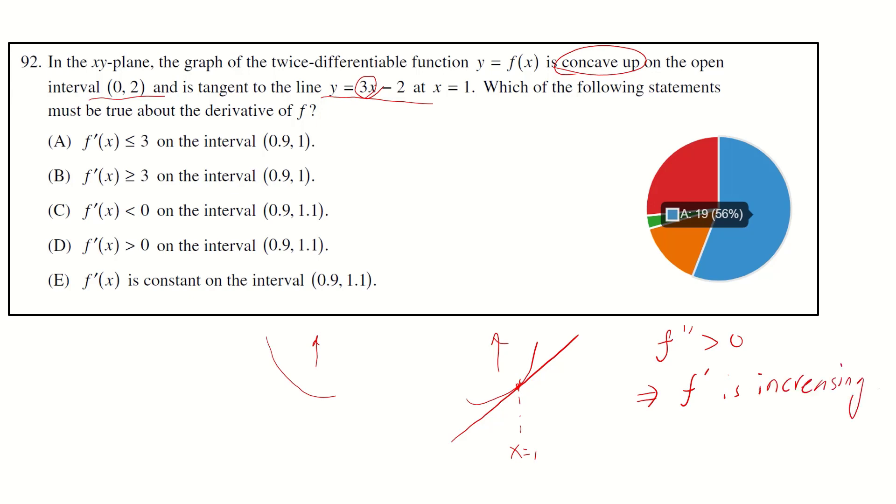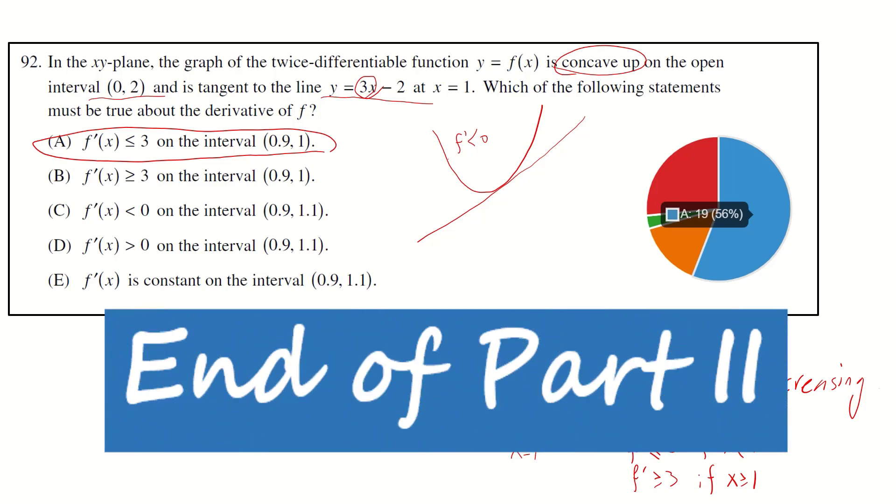f prime is increasing. At this point f prime equals 3. Therefore for x less than or equals 1, f prime less than or equals 3. For x greater than or equals 1, f prime must be greater or equals to 3. So A is the correct answer. Some ask why D is not correct. f prime is always positive may not be true because we can have a graph where f prime is negative within the region.